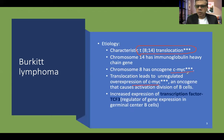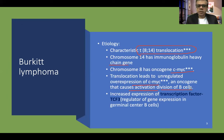CMYC is originally present on chromosome 8, and chromosome 14 bears the immunoglobulin heavy chain. The translocation — exchange of genetic material — leads to unregulated overexpression of CMYC, which causes activation and uncontrolled division and proliferation of B cells. This is a very important point in the pathogenesis of Burkitt lymphoma.